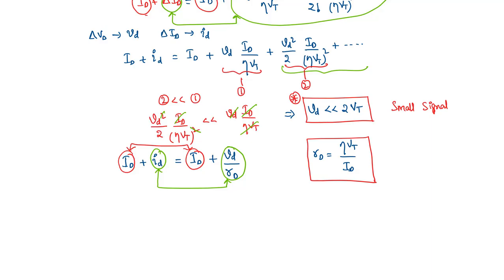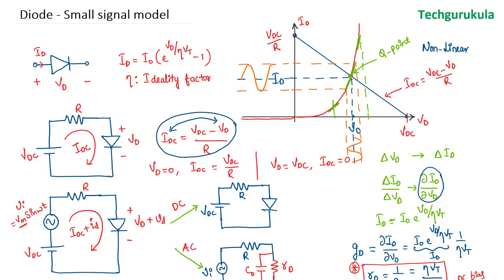The most important point to remember is that small signal parameters always depend on the DC biasing values — ID here is the DC bias current. When doing DC analysis, we can take the exact diode current equation to solve the circuit, but sometimes we substitute the diode with the large signal model to simplify analysis. If you liked the video, please give a thumbs up, subscribe if you haven't, and thank you for watching.